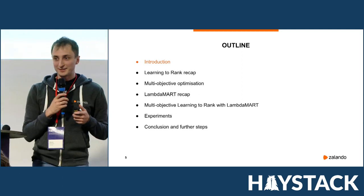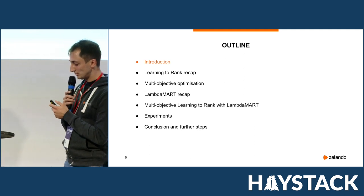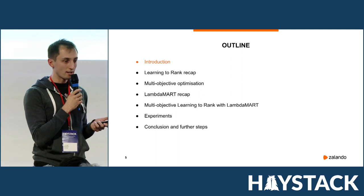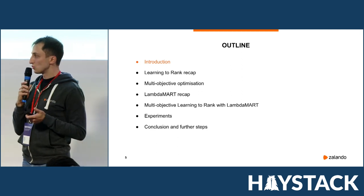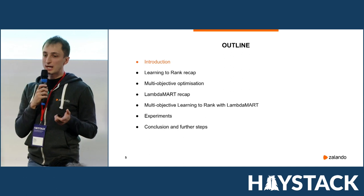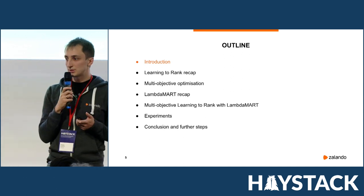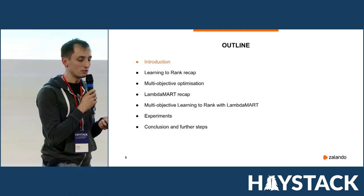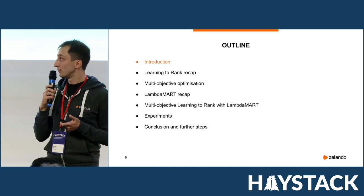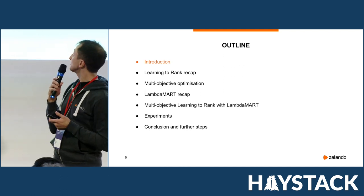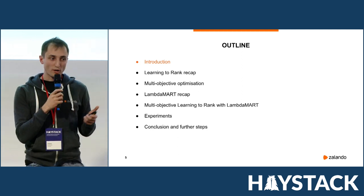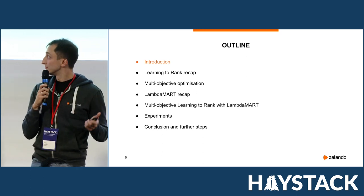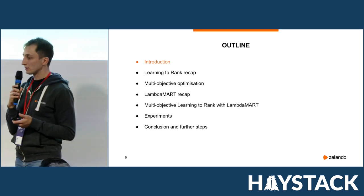Here comes the outline. Next we will have a very short recap on learning to rank. Then I will talk about several approaches one can take to solve multi-objective optimization problems. After that, we will focus specifically on learning to rank and on the LambdaMART algorithm in particular. Then I will describe some experiments that we performed, and finally talk about conclusions and some future steps we're planning to take.